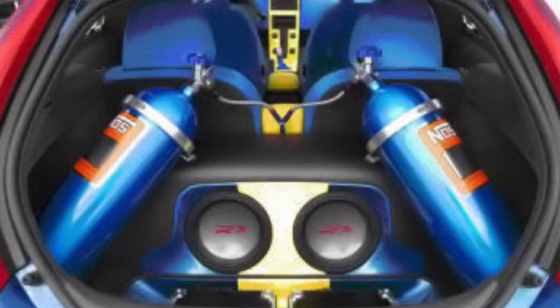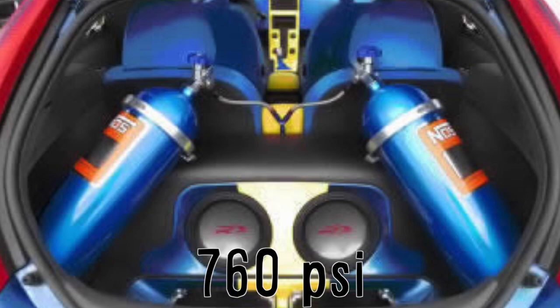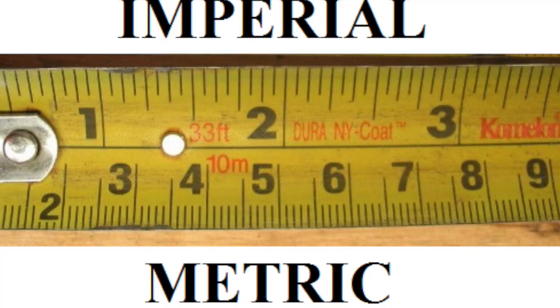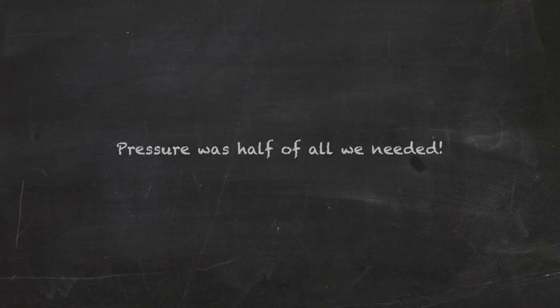Research shows that NOS needs to be pressurized to 760 pounds per square inch before it can become a liquid at 70 degrees Fahrenheit. If we change it to metric, we've already knocked out half of all we need.